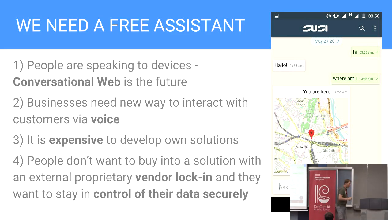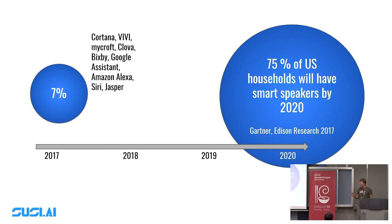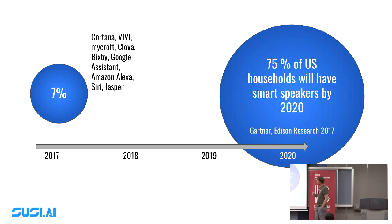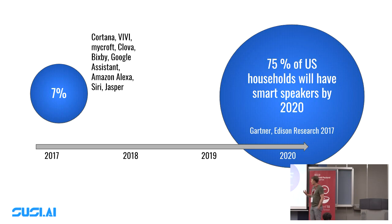By 2020, it's estimated that 75% of US households will have smart speakers. We have a few solutions out there: Cortana, Mycroft, Bixby, Google Assistant, Amazon Alexa, Siri, and others. I'd love to get feedback from the audience — which ones have you used? What is your experience, and where are they suitable?